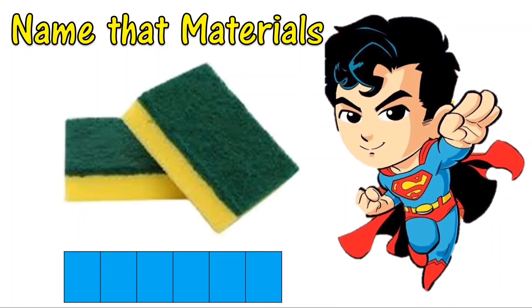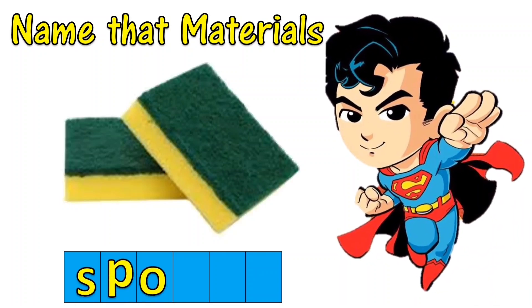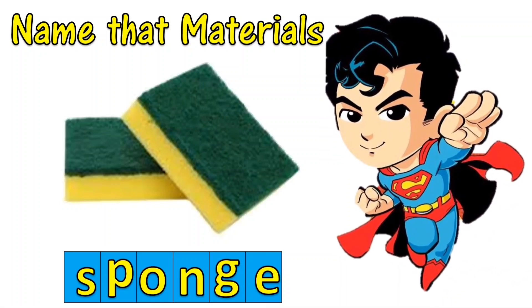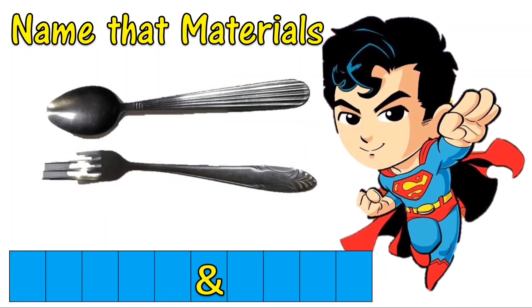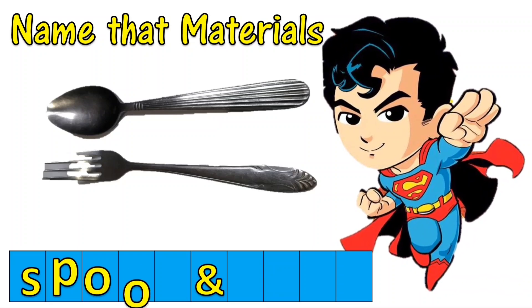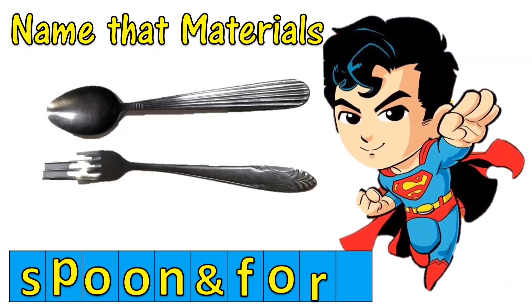What material is in the picture? Very good. The material in the picture is a spoon and fork.